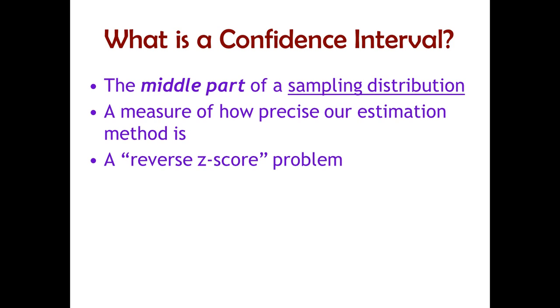It's also just a reverse Z-score problem. You give an area, actually two areas, or an area in the middle of a distribution, and we say, what are the raw scores that cut off that middle area?